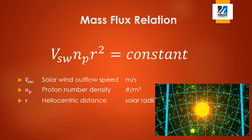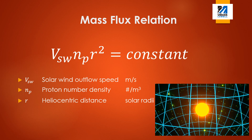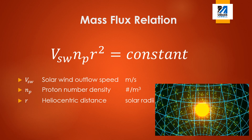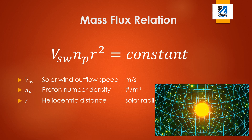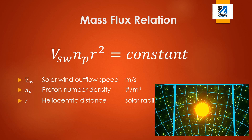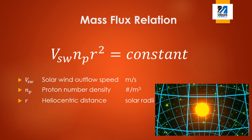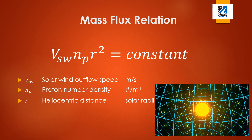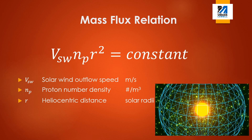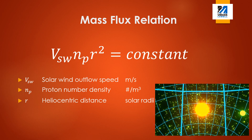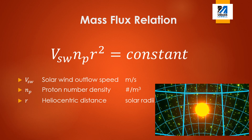The V term is the radial component of the solar wind velocity in meters per second. NP is the proton number density in number of particles per cubic meter. R is the heliocentric radial distance in solar radii. The R squared term comes from the spherically symmetric nature of the solar wind. Because of this, we can calculate the flux by considering the number of particles which pass through the surface of a hypothetical sphere of radius R centered about the sun.